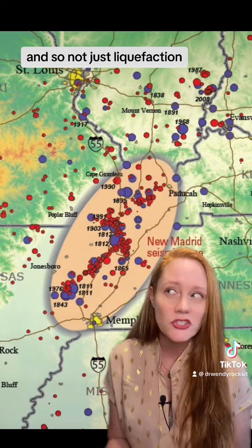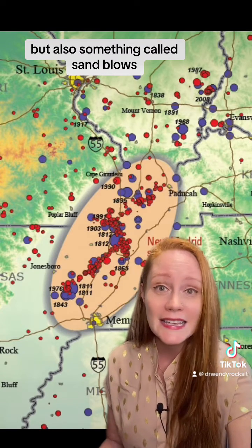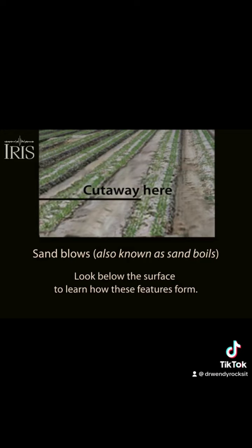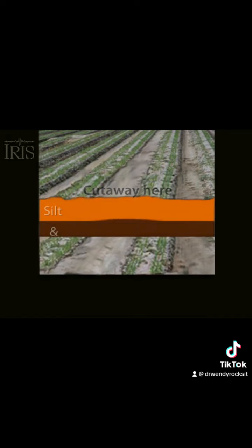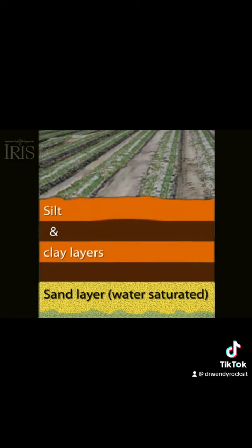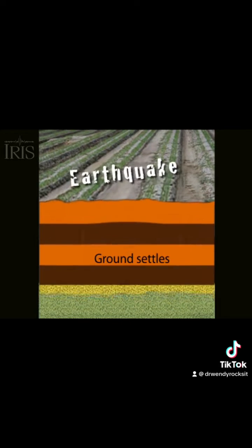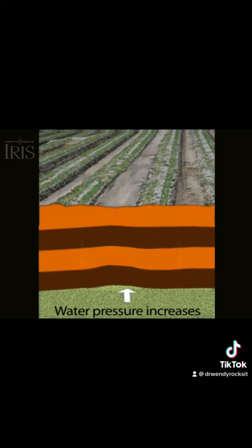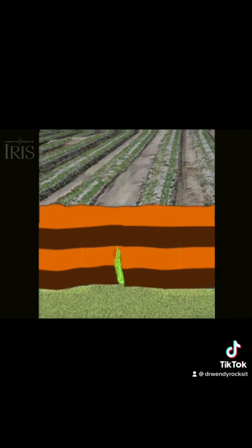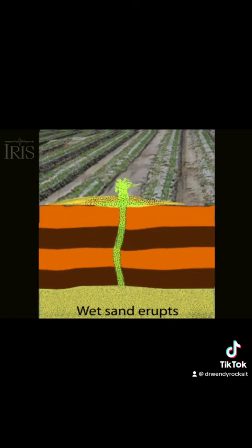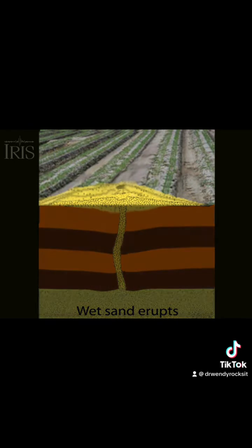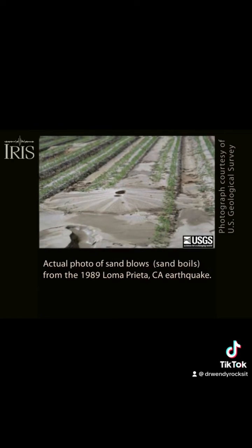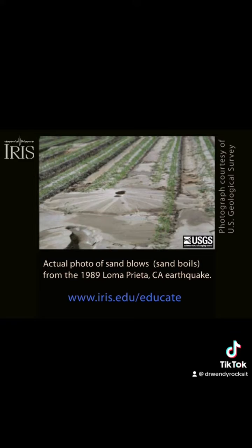And so not just liquefaction but also something called sand blows. This video from IRIS shows how sand boils form. Looking below the surface, you can see that sand layer that has a lot of water. When an earthquake happens the ground settles, which increases the water pressure in that layer. The slurry of water and sand will then get forced up through cracks in the rock, bringing all of that sand out onto the surface making what looks like a little sand volcano. This is actually what they look like, and they're all over the landscape.